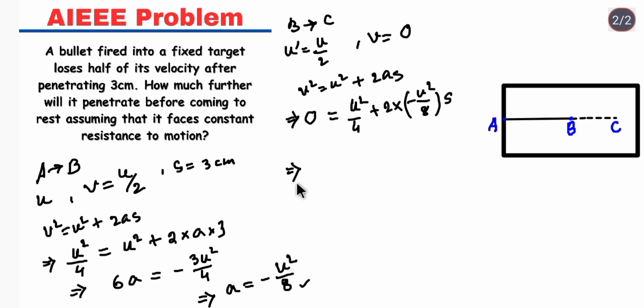In the next step we will get U squared by 4 minus U squared by 4 equals minus U squared by 4 into S. These terms cancel, so S equals 1 centimeter.